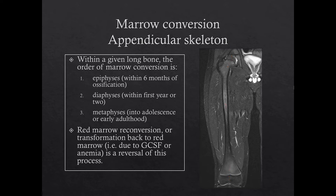Since marrow conversion in the skeleton goes from distal to proximal, the last place to convert in the femur would be in the proximal metaphyses. This also explains why some adult patients can have residual red marrow in the metaphyses, sometimes seen on routine shoulder or hip MRIs. Also note that red marrow reconversion is a reversal of this entire process.